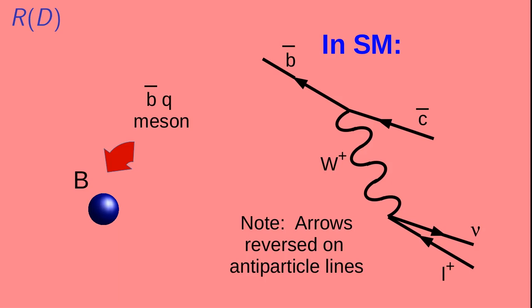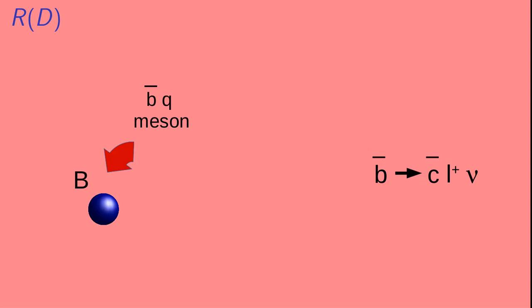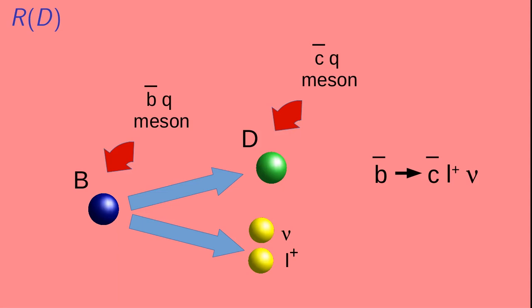In the standard model, a B antiquark can turn into a C antiquark by emitting a W particle, which then can decay into a positively charged lepton, which we'll call L, and a neutrino. This gives the process B bar goes to C bar plus a positively charged lepton and a neutrino. Let's apply this process to our B meson. The B antiquark in the B meson turns into a C antiquark, and a positively charged lepton and a neutrino are emitted. The other quark just goes along for the ride, forming what we will generically call a D meson.